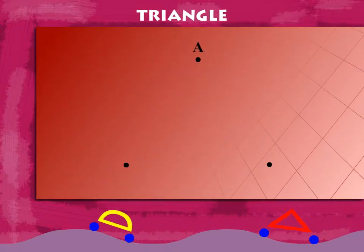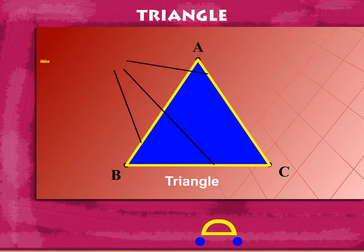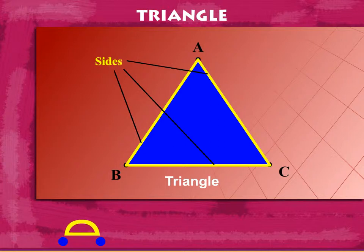Triangle: A polygon with three sides, or the least number of sides, is called a triangle. The three line segments forming a triangle are called the sides of a triangle.